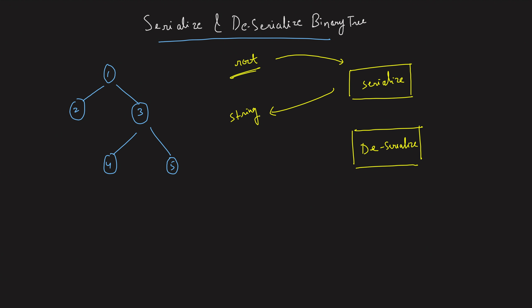What logic you implement is on you — I want a string. The moment I give this string to Deserialize, I'll take the same string and pass it to Deserialize, which you also write. You have to apply the reverse logic: you applied some logic to convert the root to a string, so now in Deserialize you apply the reverse logic to get back the same root — not just the root, but the entire binary tree reconstructed.